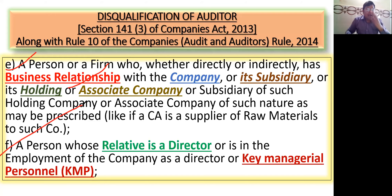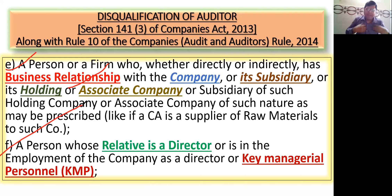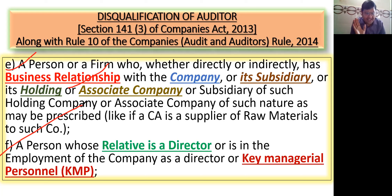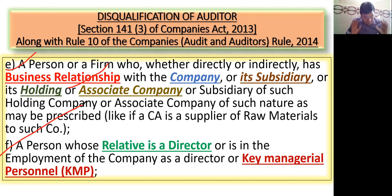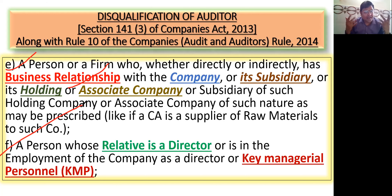F clause में क्या बोलता है? कि अगर मेरा कोई relative उस company का director है या key managerial person है, तो भी मैं auditor नहीं बन सकता — मैं disqualify हो जाऊंगा। जैसे मैं Reliance Company का auditor बनना चाहता हूँ, लेकिन मेरा brother उस company का director है, तो मैं disqualify हो जाऊंगा। या मेरी sister उस company की key managerial person (KMP) है, तो भी मैं उस company का auditor नहीं बन सकता।